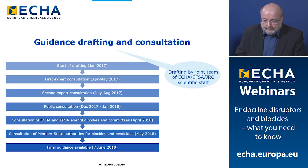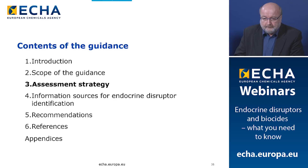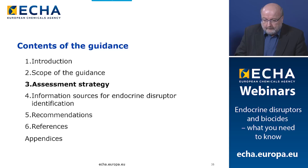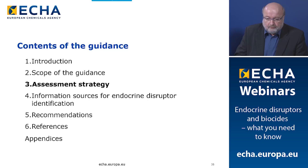The content of the guidance includes: an introduction with background and summary; the scope of the guidance; and as the main section, the assessment strategy. There is also a section on information sources for endocrine disruptor identification, which is highly recommended reading as it provides a good summary of the OECD Guidance Document 150 — which is around 1,500 pages — condensed into around 40 pages. Additionally, there are sections on recommendations, references, and appendices providing further guidance on particular issues.